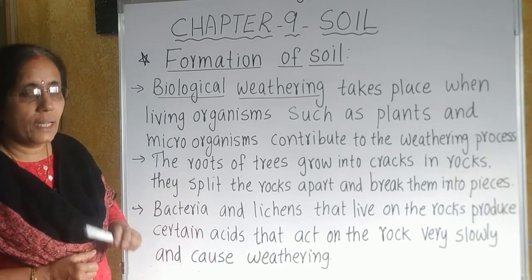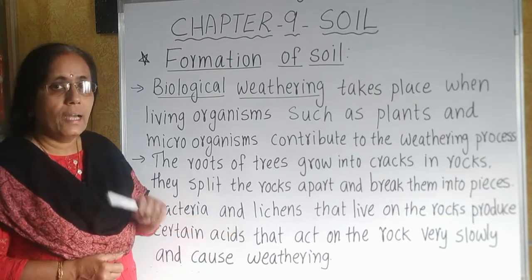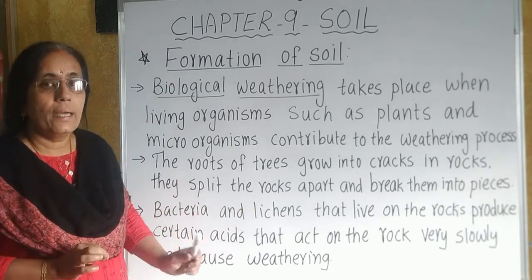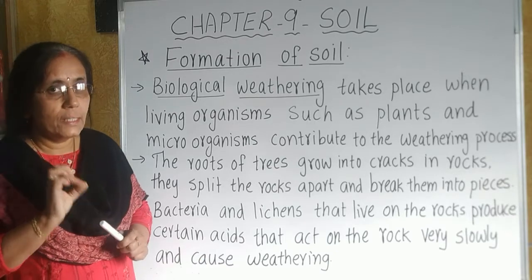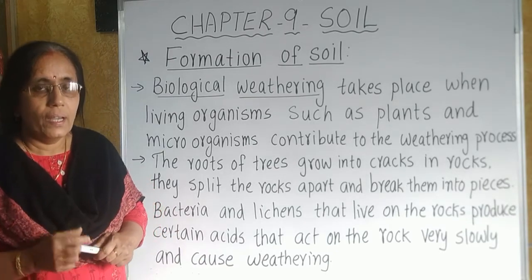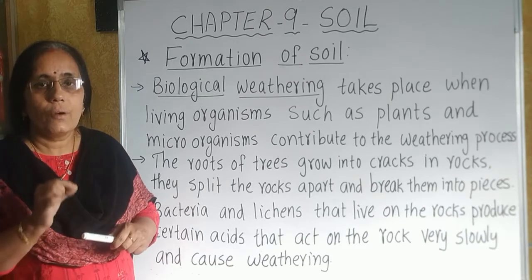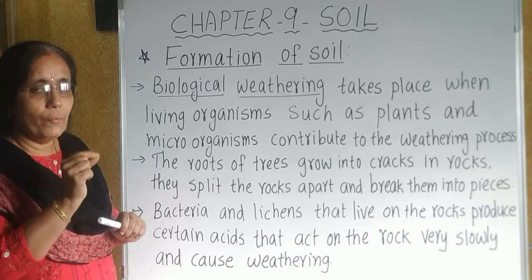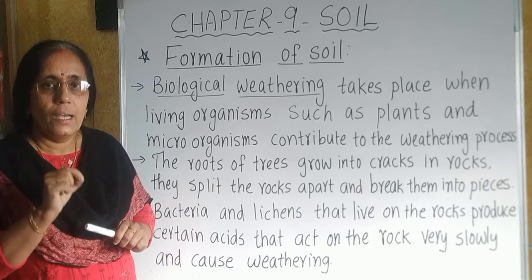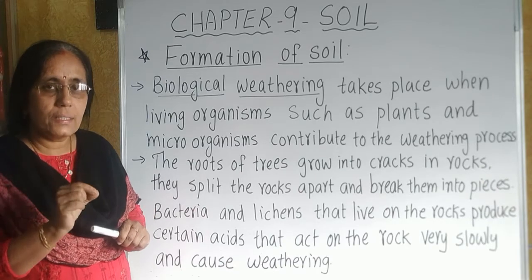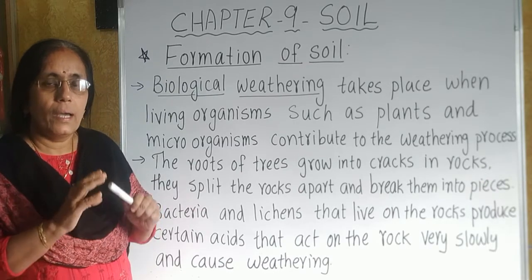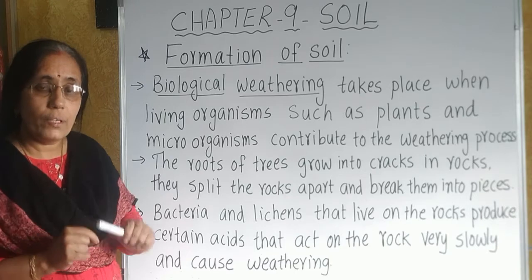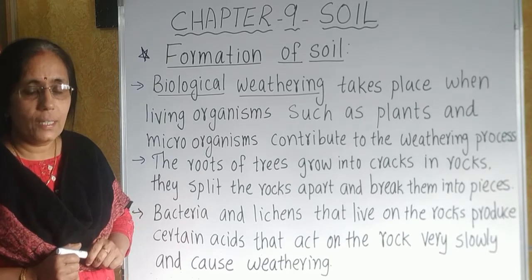Other living organisms like bacteria and lichens that live on the rocks produce certain acids that act on the rock very slowly and cause weathering. Lichens are an association of algae and fungus. These acids react with the minerals in the rock and cause weathering, meaning the soil is formed by the action of living organisms — which is why we call it biological weathering.